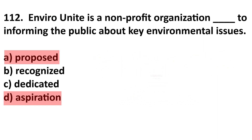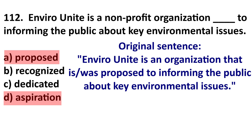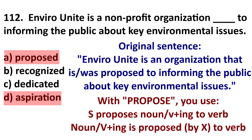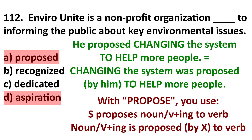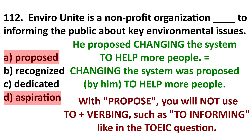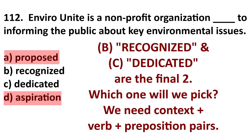Now that D is gone, let's eliminate A. If we used the adjective clause it would be 'Enviro Unite is a non-profit organization that was proposed to informing the public' — this is strange. When you use 'propose,' you say 'propose verb-ing,' like 'he proposed changing the system,' or 'propose to verb,' like 'he proposed to change the system.' But you don't say 'to verb-ing,' so 'to informing' is incorrect. Remove A.